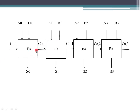In a Ripple Carry Adder, we go through the first stage. The input is A0 and B0. We have a carry input, and we add to produce a carry output. Then the carry output of one stage becomes the carry input of the next stage.